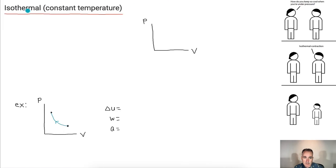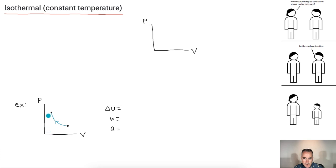Now we've got isothermal — that's when the temperature is the same. If you keep the temperature constant, the volume will go down as the pressure goes up.